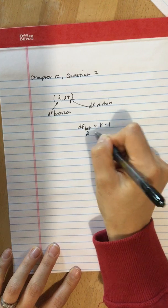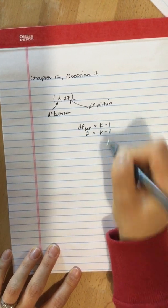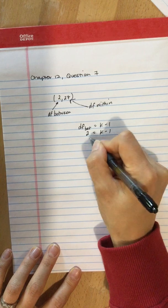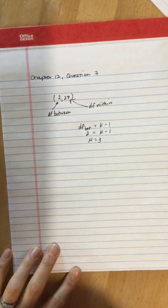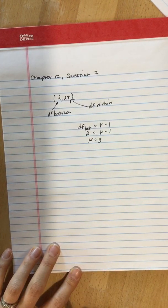So if this equals 2 is k minus 1, then we add 2 to each side, k equals 3. There were three treatment conditions.